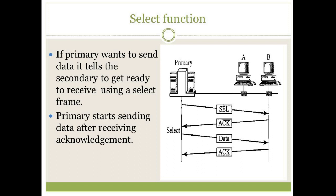In polling, we use a select function. When the primary wants to send data, it tells the secondary to get ready to receive using a select frame. Primary will initiate the communication and send a select frame to the device. As you can see in the picture, the primary has sent the select message to device B. If B is ready to receive the data, it will send an acknowledgement. Then primary will send the data, and when the data is received by B successfully, B will send an acknowledgement.